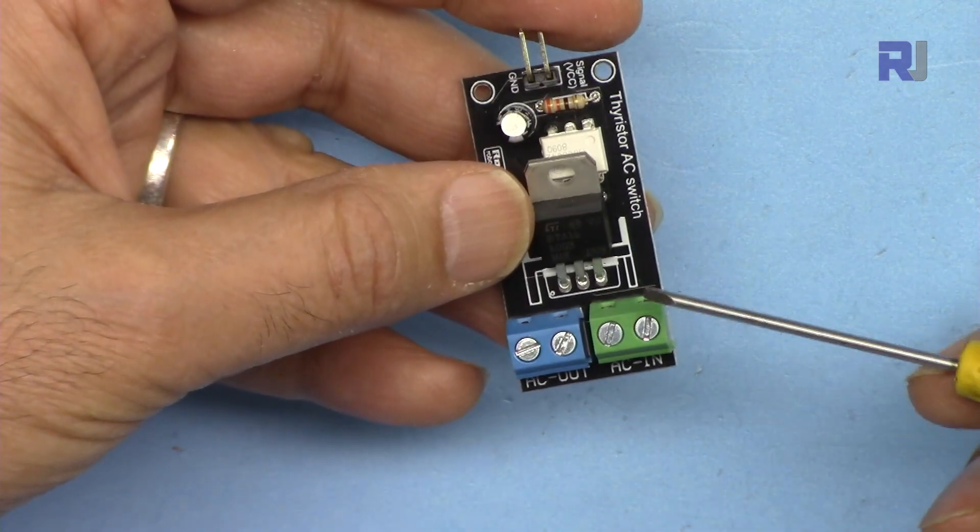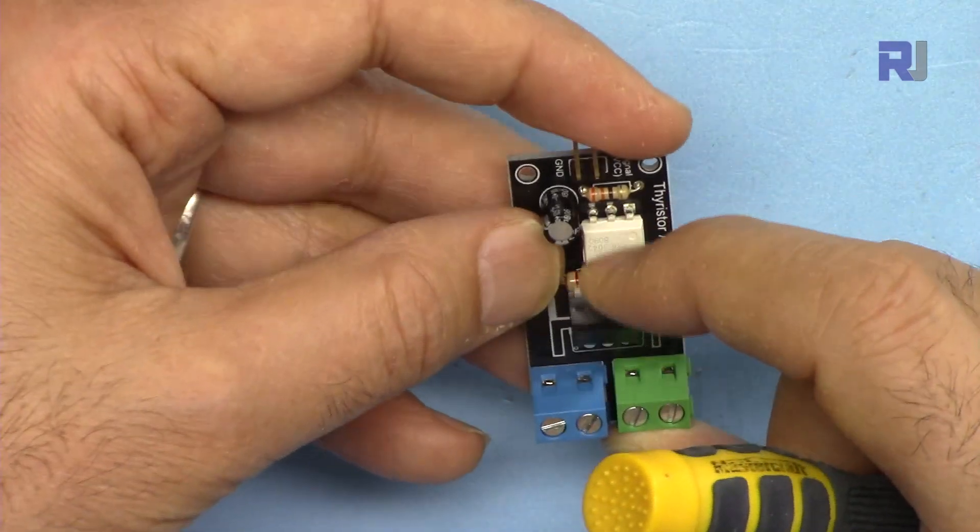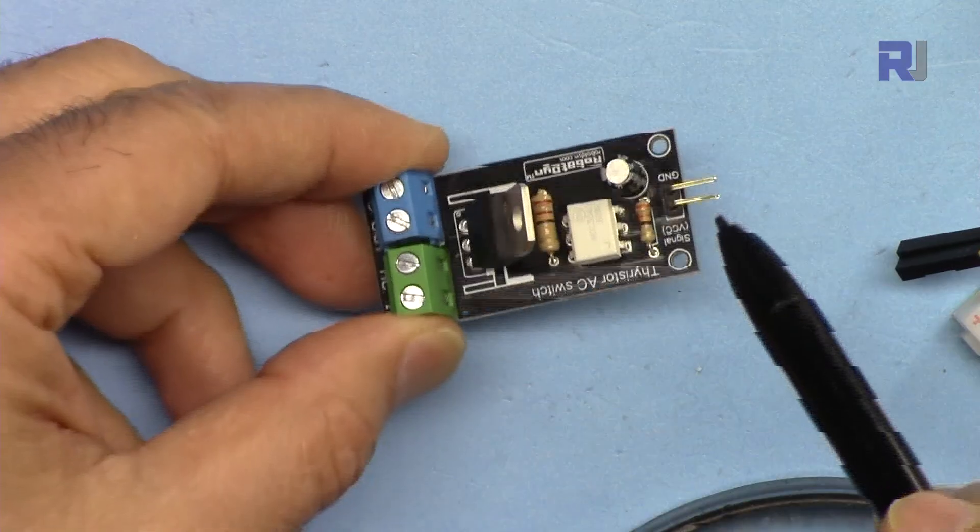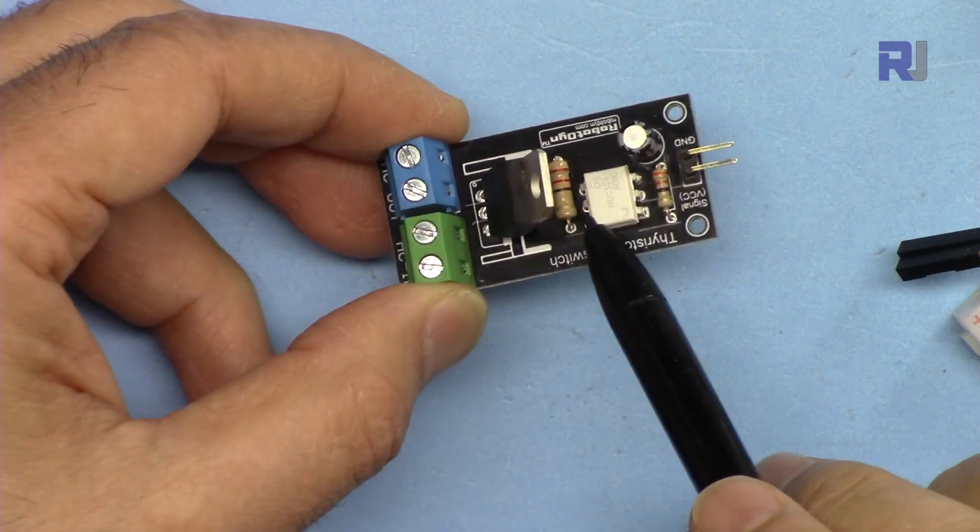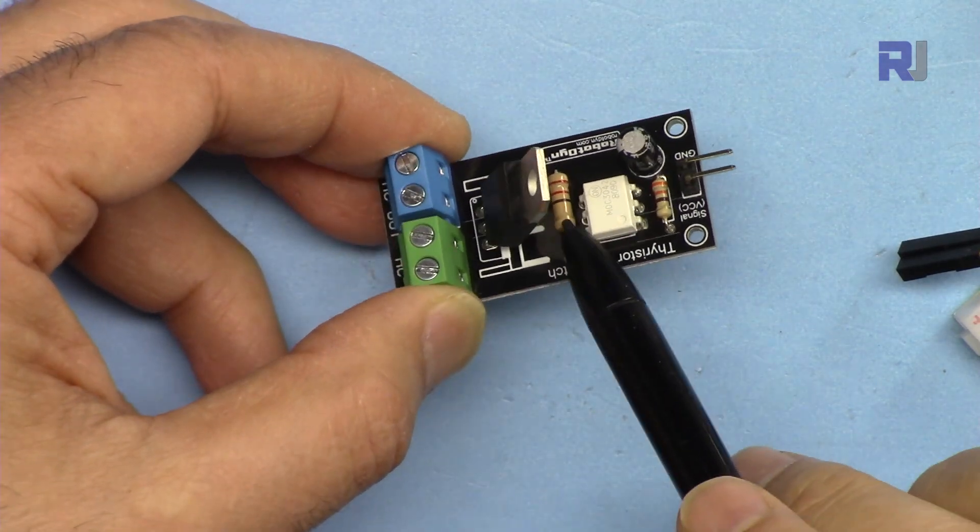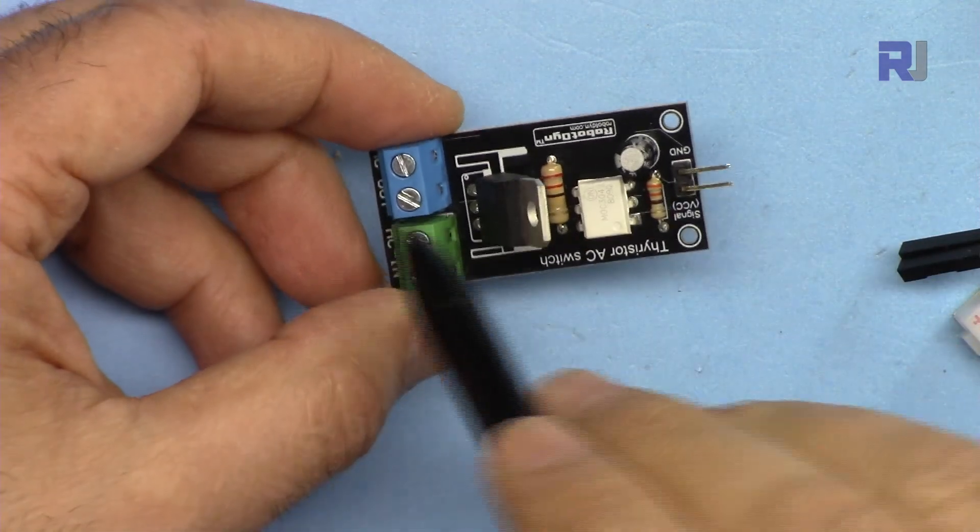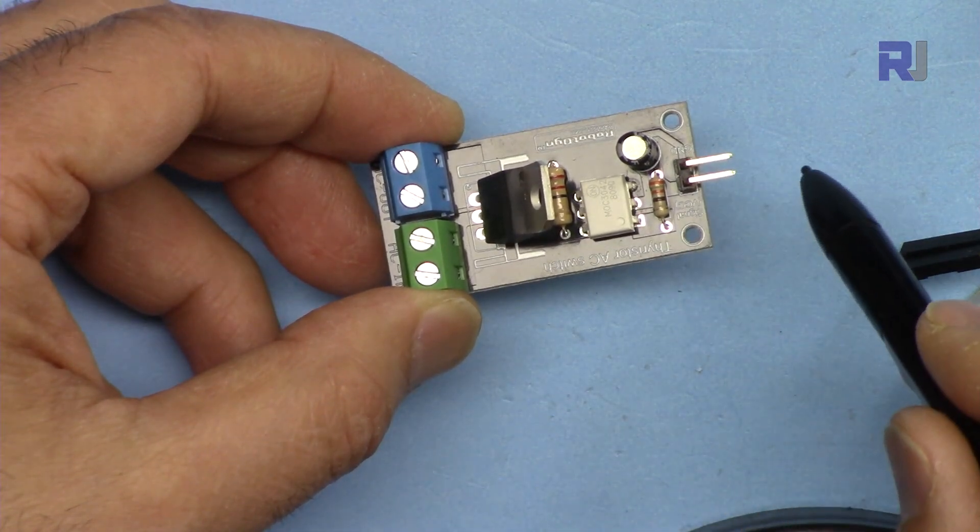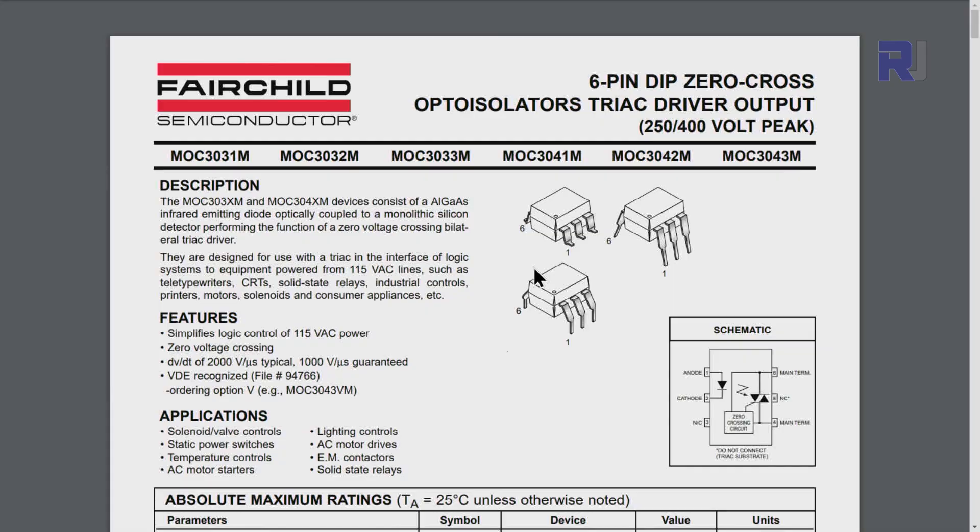It can handle up to 16 amperes at 600 volts, but because there is no heatsink this will not be able to handle that, so it will be a few hundred watts. This is the MOC3042 triac driver, an optocoupler which means optically isolated, so your Arduino will not have any connection physically in terms of electronics to this. These two pins will connect and the circuit will be completed inside, optically isolated.